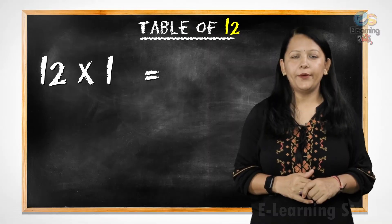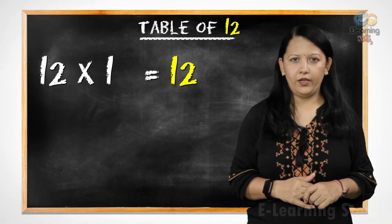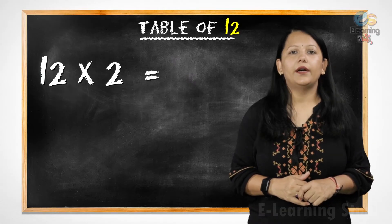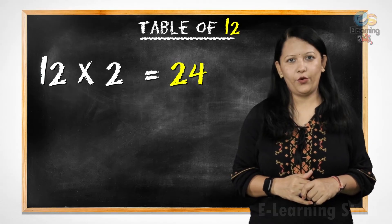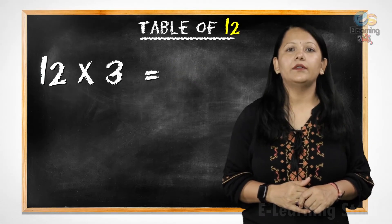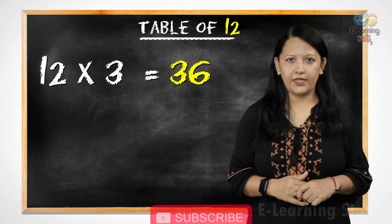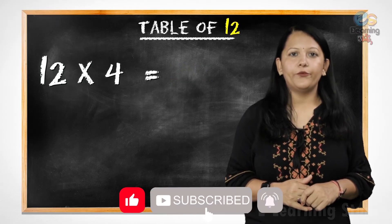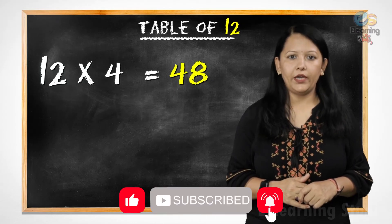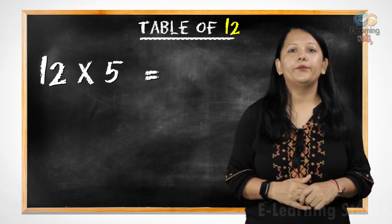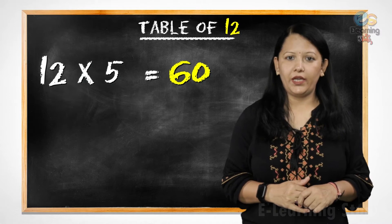12 ones are 12. 12 twos are 24. 12 threes are 36. 12 fours are 48. 12 fives are 60.